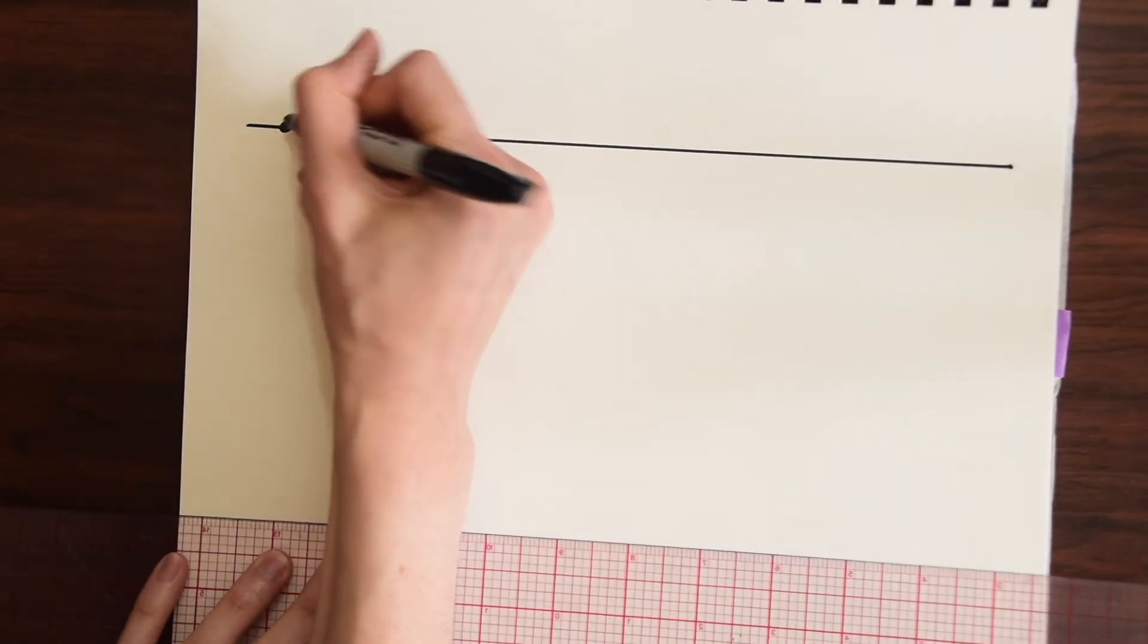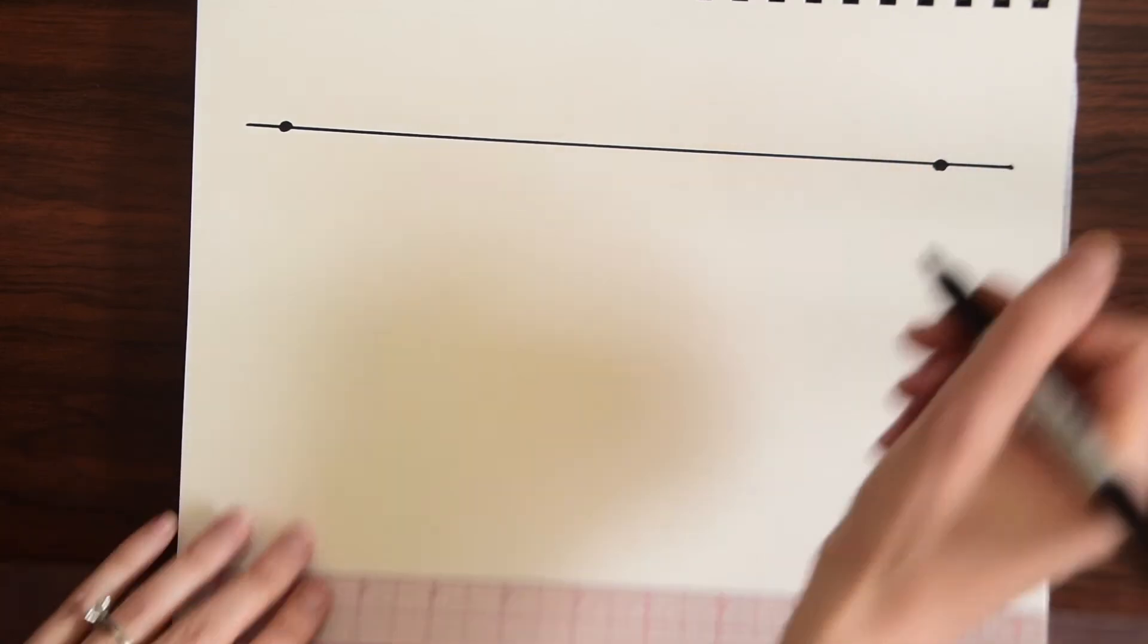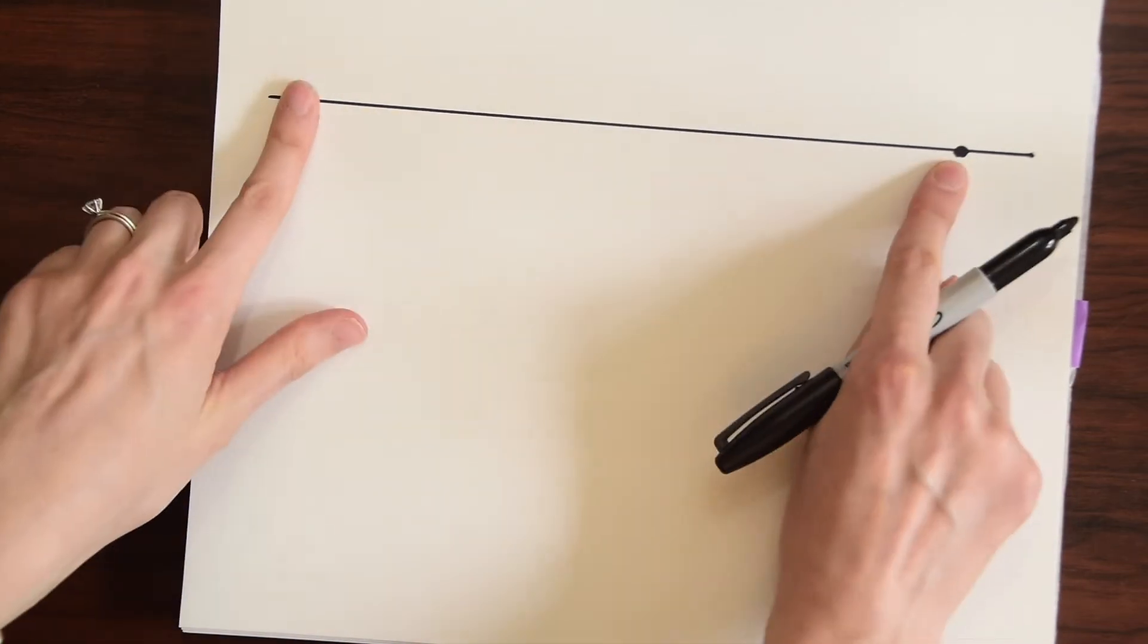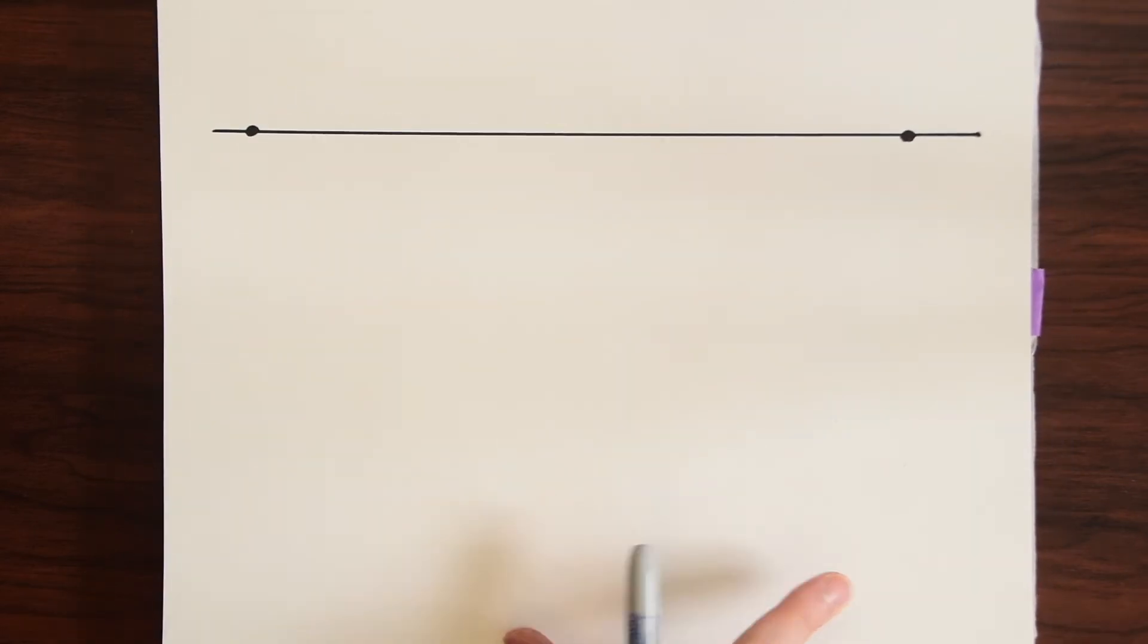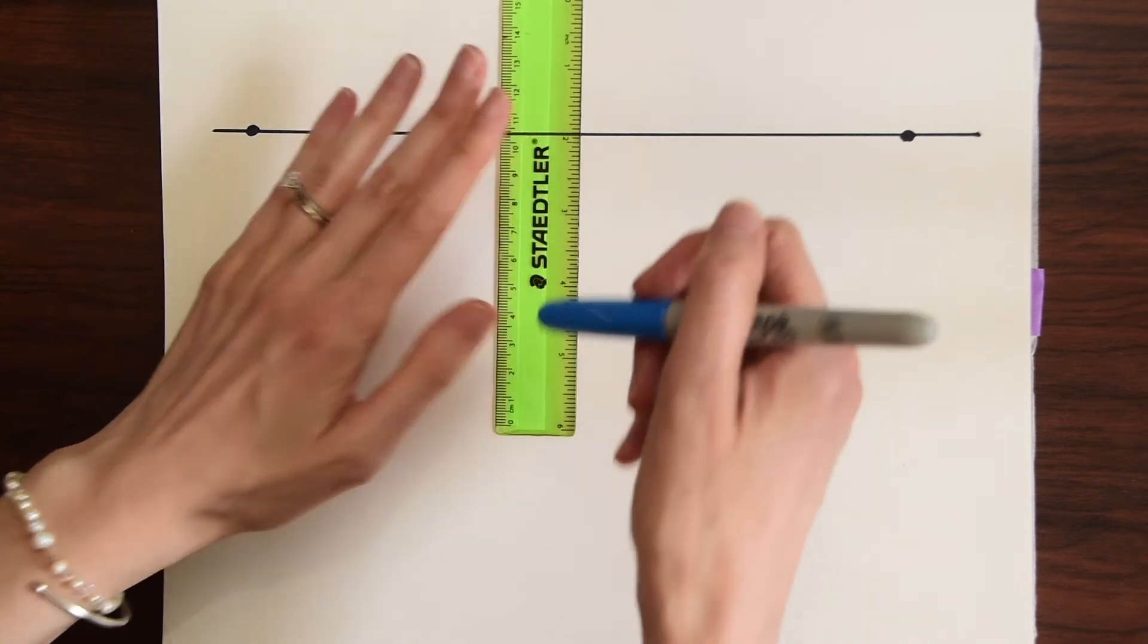So no matter where our two vanishing points are they're always going to be 90 degrees apart and we're going to see how that changes the picture of our box. So let's see first our two vanishing points. Let's see what it looks like. They're really far apart. So first I'm going to draw my box.